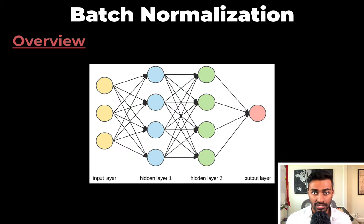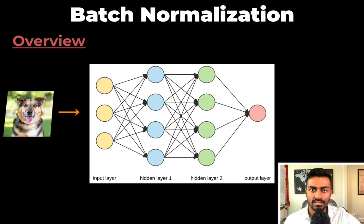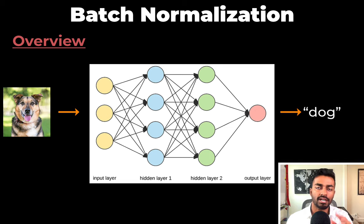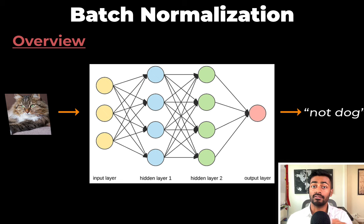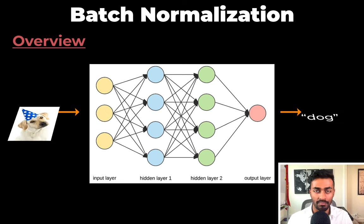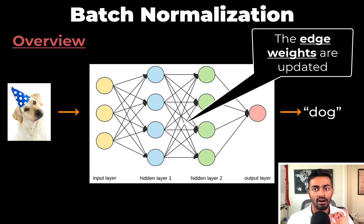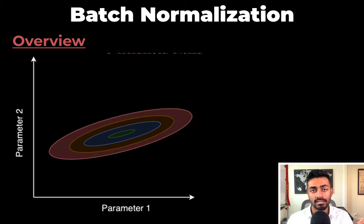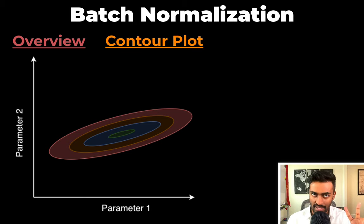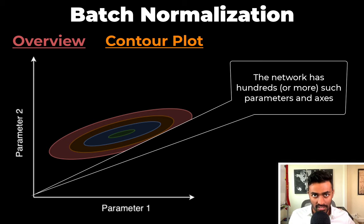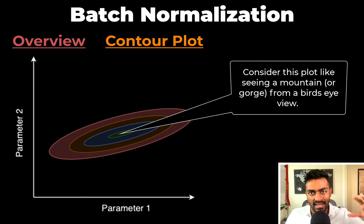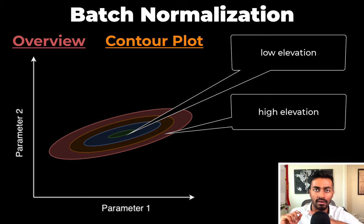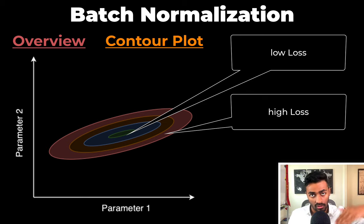Let's motivate batch normalization in this first pass. This is a feedforward neural network, and let's say we want to train it to take in an input image and determine if it is a dog or not a dog. During the training phase, we feed hundreds of image-plus-label pairs. After each iteration, the network parameters are updated and the model learns. This is a contour plot of just two parameters of the neural network — in reality, the network has possibly hundreds or thousands of parameters. Consider this contour plot like seeing a mountain from a bird's eye view: blue and green are the low parts of the mountain, red and orange are the high parts. Blue and green represent low loss, whereas red represents high loss.